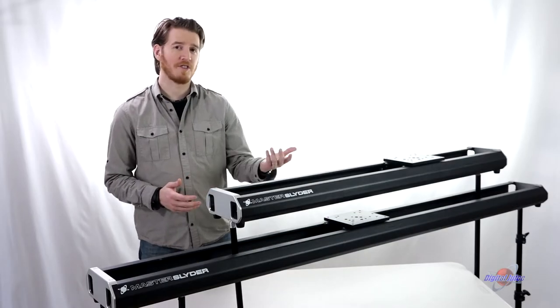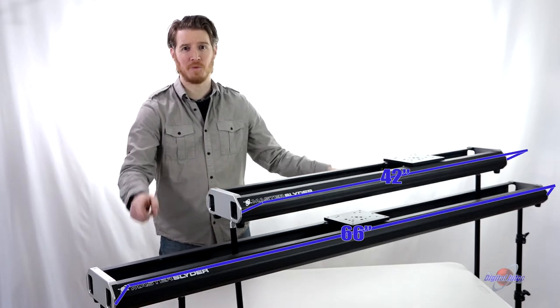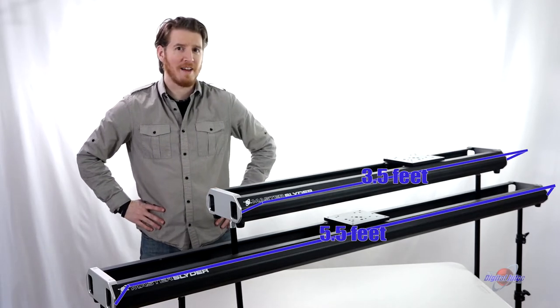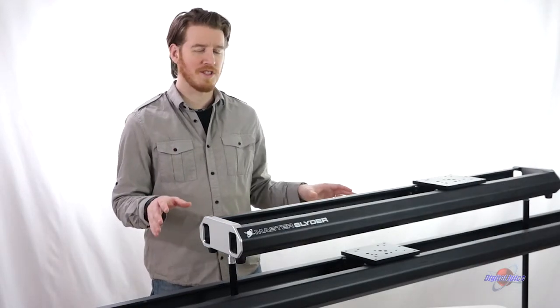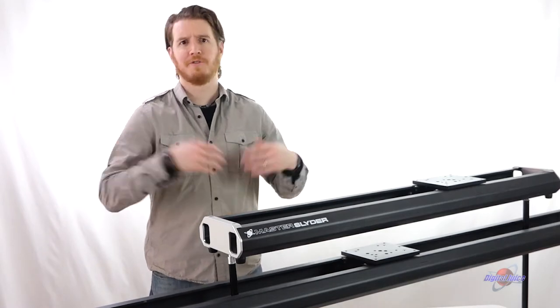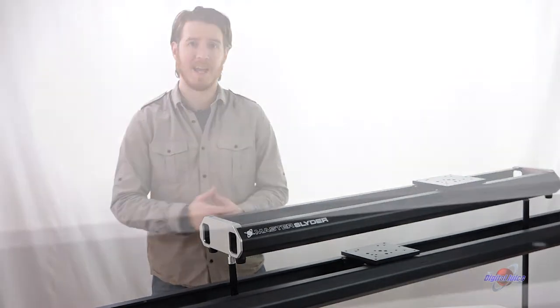The master slider comes in two different sizes, a 42 inch and a 66 inch which is 3.5 feet and 5.5 feet respectively for you math majors. This heavy duty slider system was designed to support everything from DSLRs all the way to fully rigged out ARRI and RED cinema cameras.